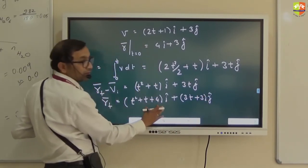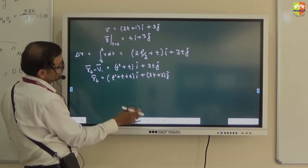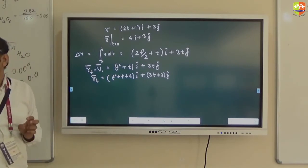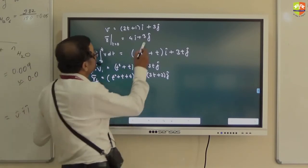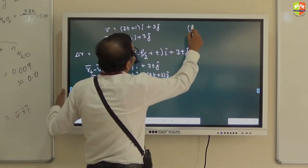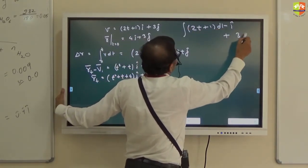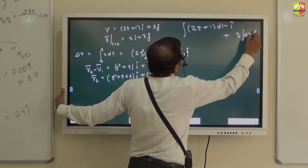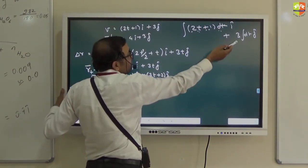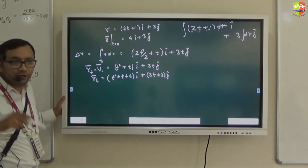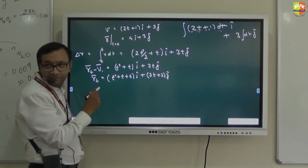Understood this? Yes. All of you understood? All of you understood? Yes. Integration vector, how do you get? How do you get here? Integration V dt, no? This is 2t plus 1 dt integral i cap plus 3dt integral j cap. So dt will come inside so it will be 2t dt plus dt. 2t dt integral is 2t square by 2.